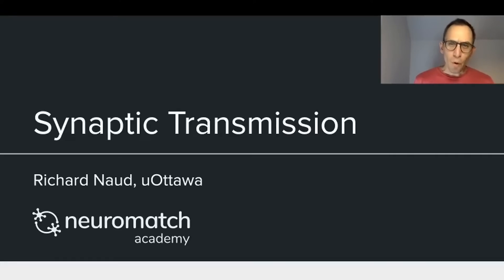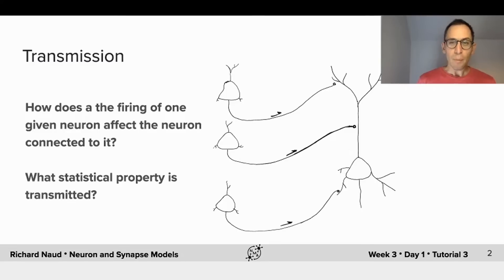Hello and welcome to this Neuromatch Academy lecture on synaptic transmission. My name is Richard Naud, I'm from the University of Ottawa and today I want to talk about the question of when one neuron is connected to another neuron through a synapse, how does the firing of the first neuron influence the state of the other neuron? And in particular I want to know what statistical property of the presynaptic neuron ensemble is communicated to the postsynaptic neuron.